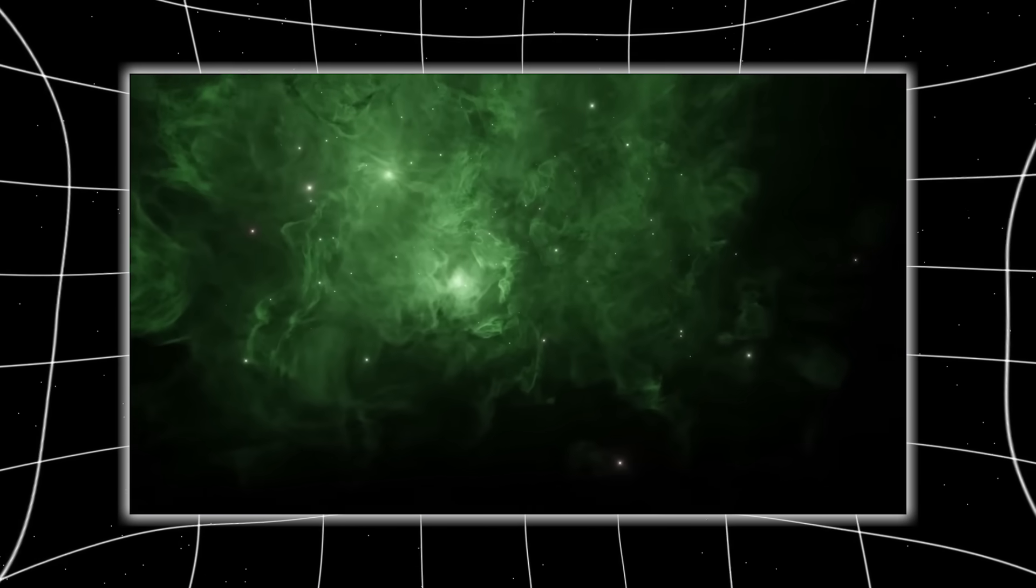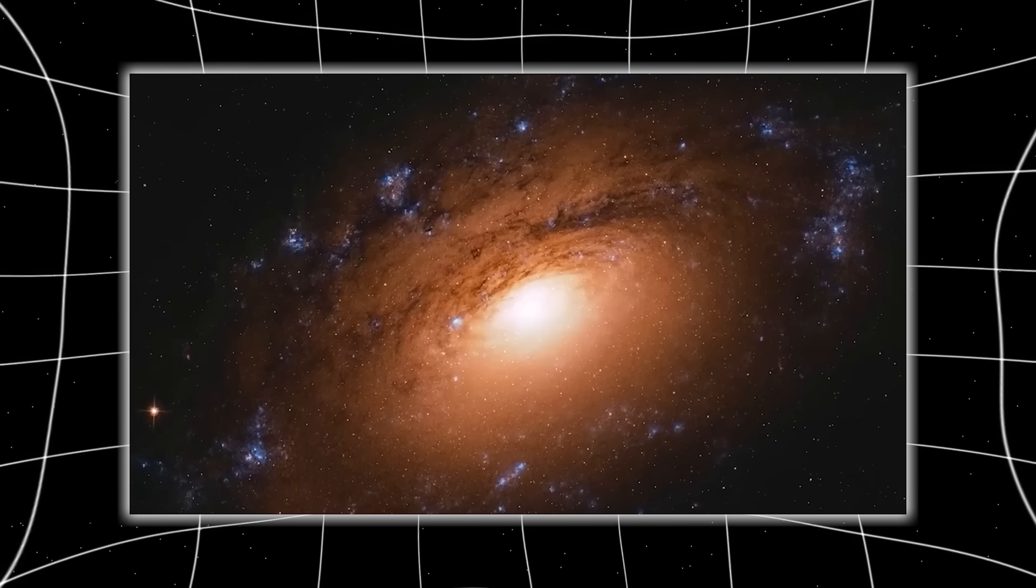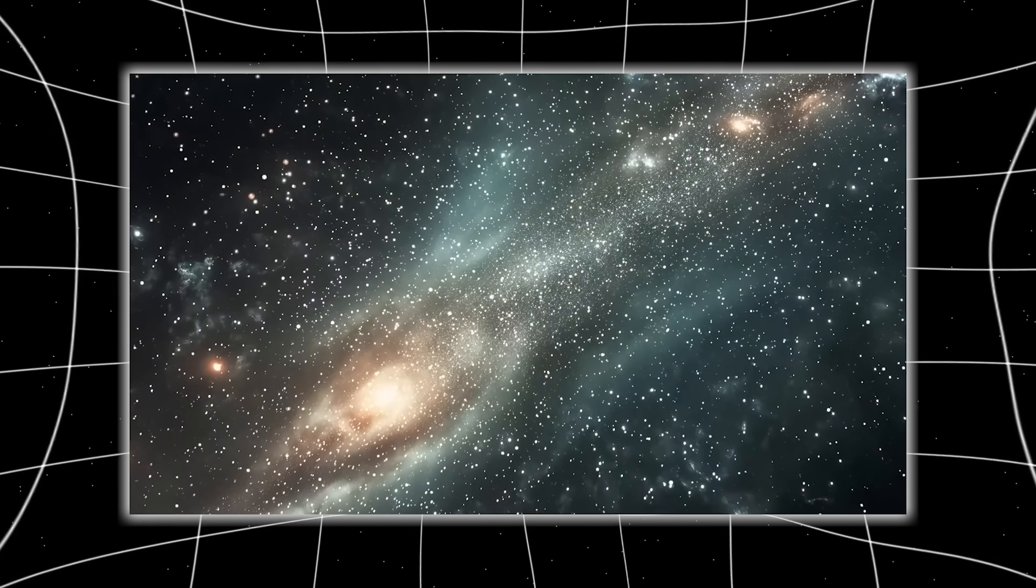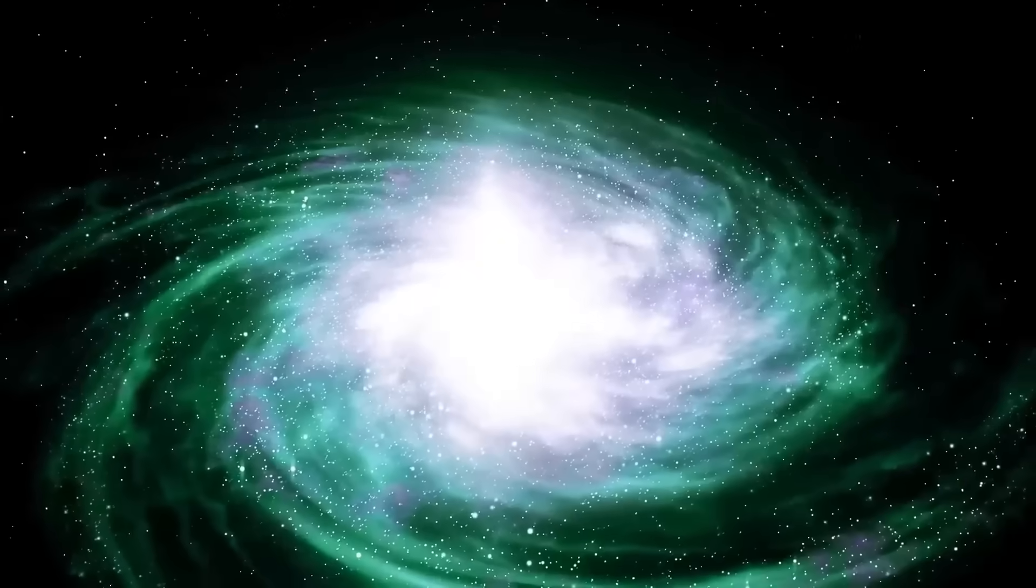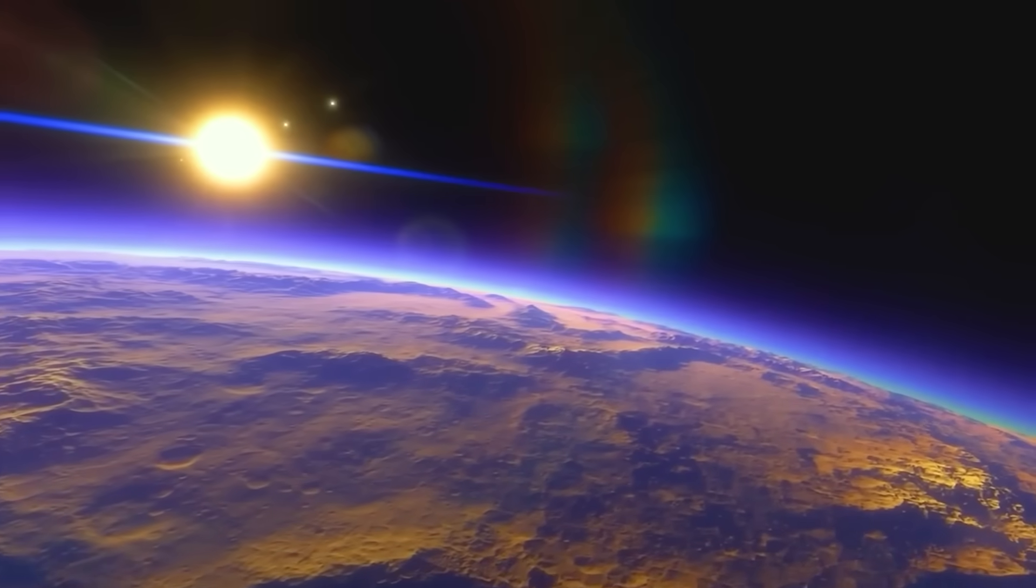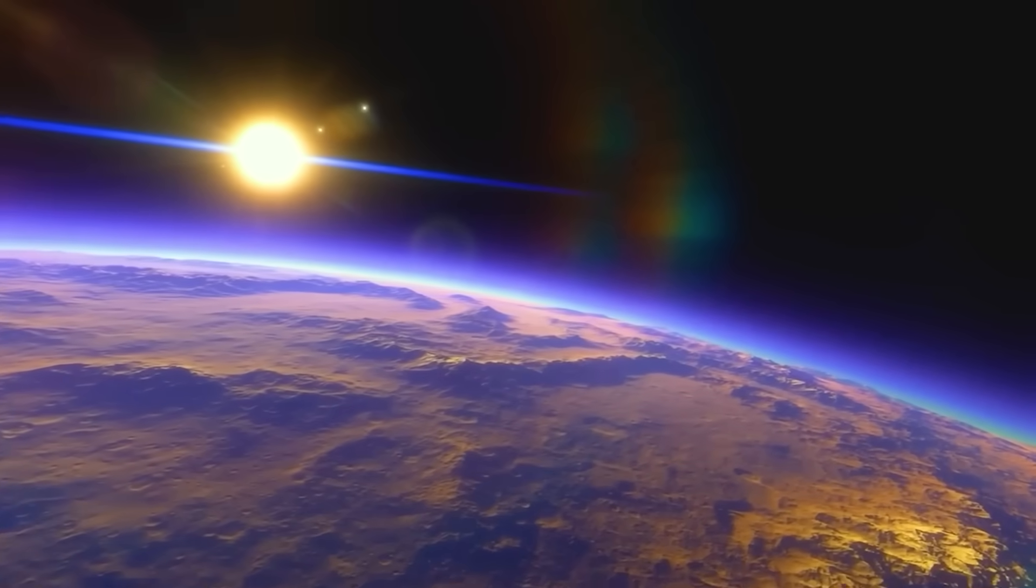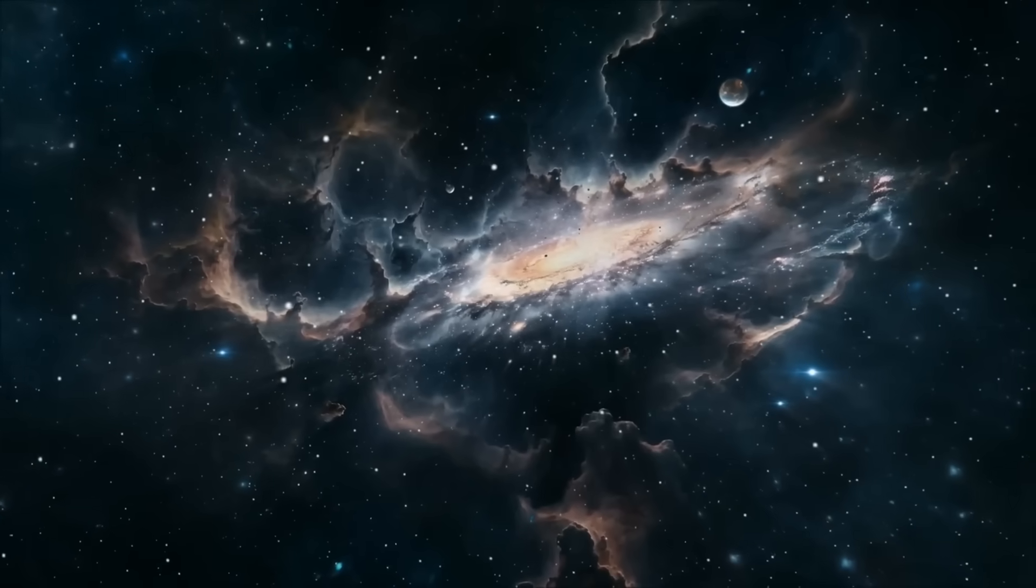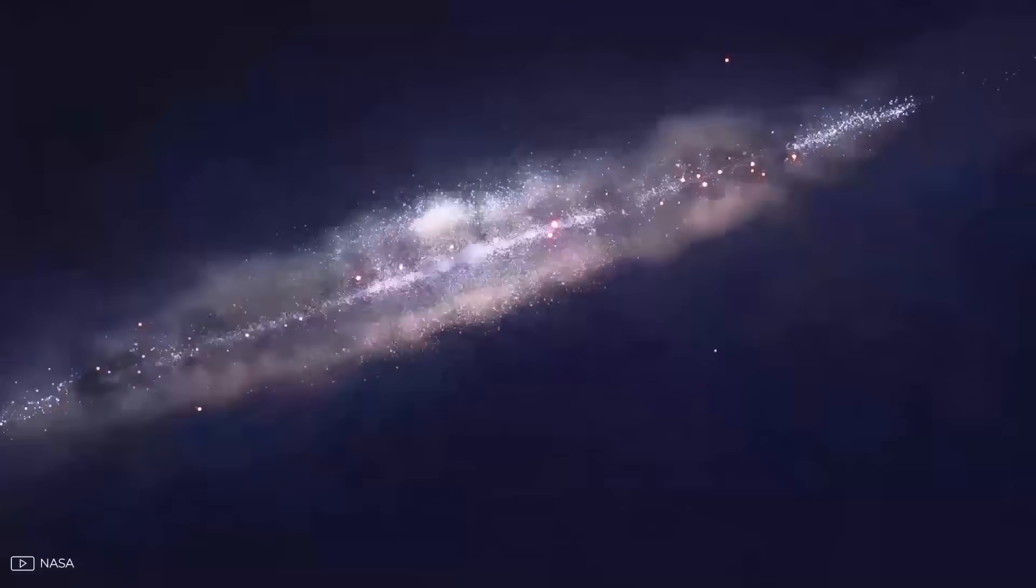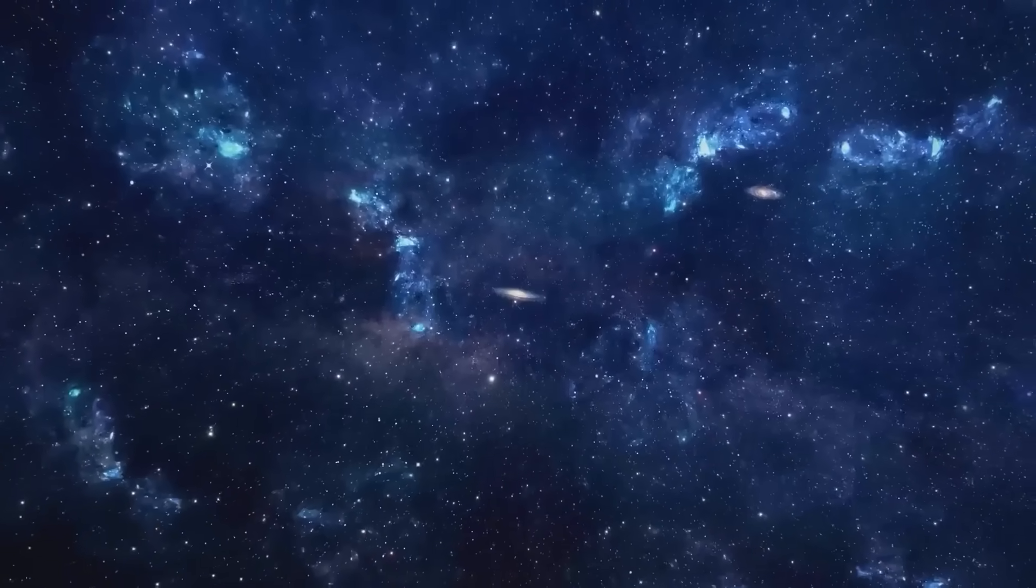But it didn't look like a baby galaxy. It didn't look primitive or small or chaotic. It looked structured, massive, fully formed, a veteran in an era where only newborns should exist. And this is the moment when panic began to spread quietly behind the scenes. Because if even one fully formed galaxy existed at that time, then everything we know about early universe physics is wrong.